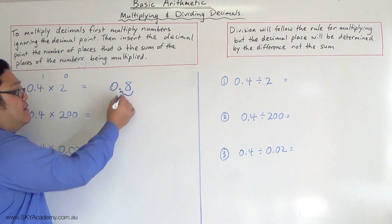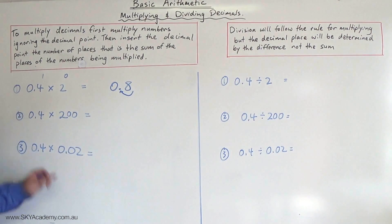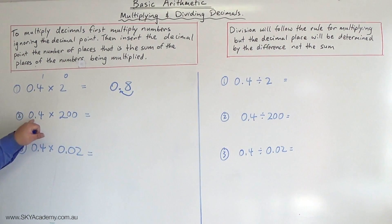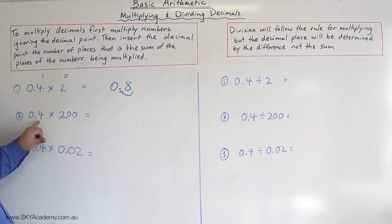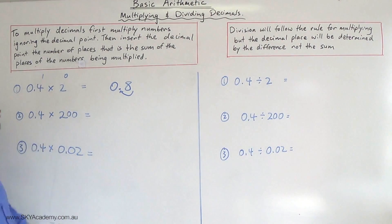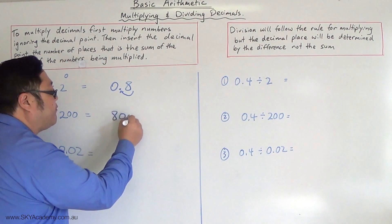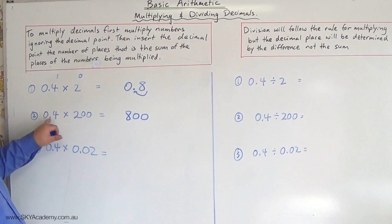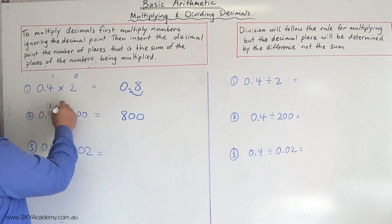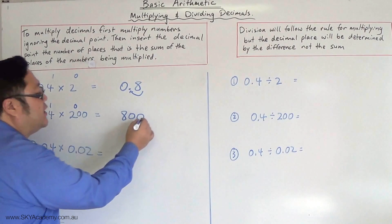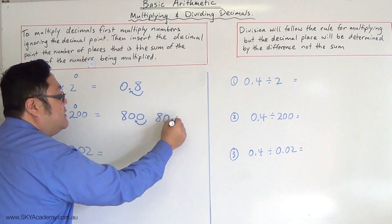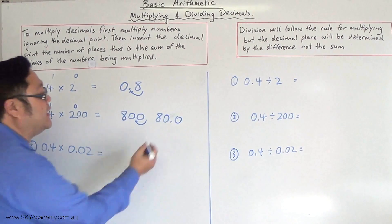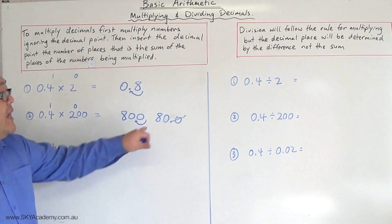Let's have a look at the next question: 0.4 times 200. The first thing you do is 4 times 200, which is 800. Then you go one decimal place in because there's one decimal place and no decimal places — so you go one decimal place in and your answer is 80.0, which you can just write as 80.